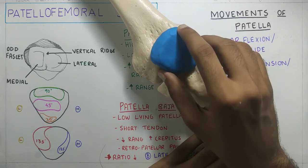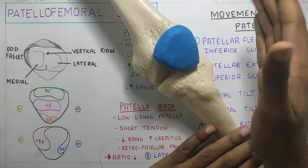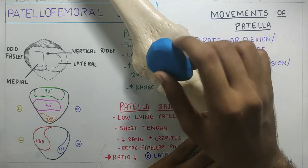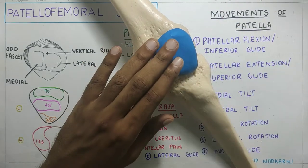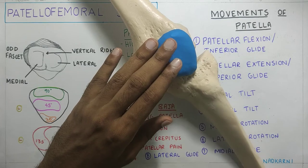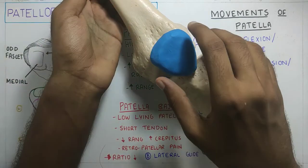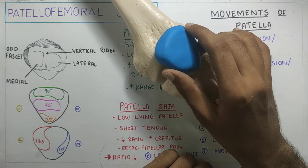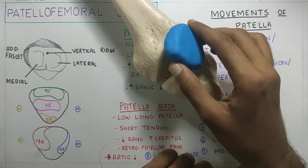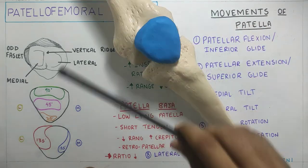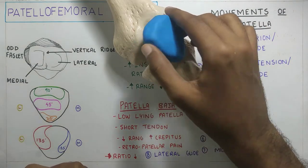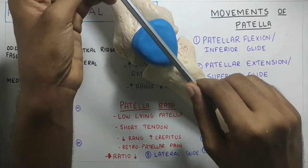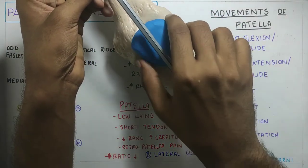Lateral tilt is when the anterior surface of the patella moves to the lateral side, and medial tilt is when the anterior surface moves to the medial side. When the tibia rotates medially — causing relative lateral rotation of the femur — the patella goes into lateral tilt. This tilt occurs around the longitudinal or vertical axis.